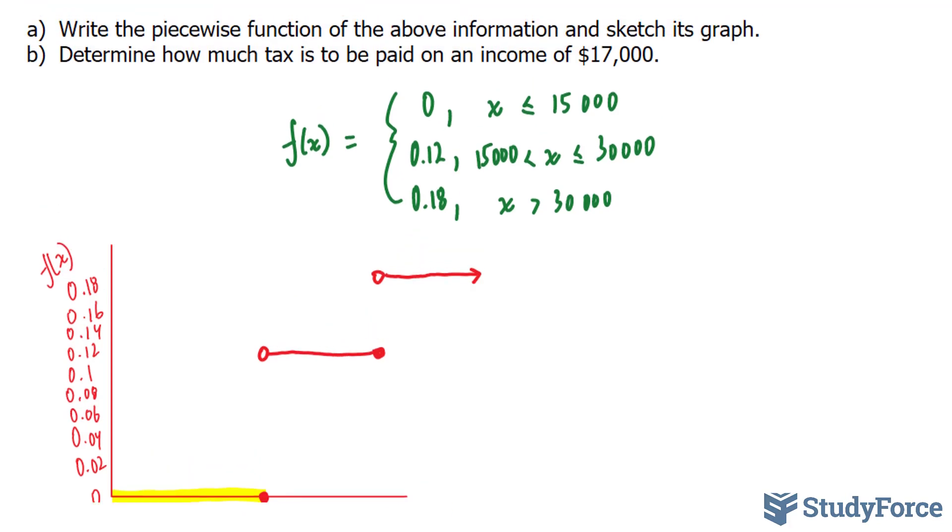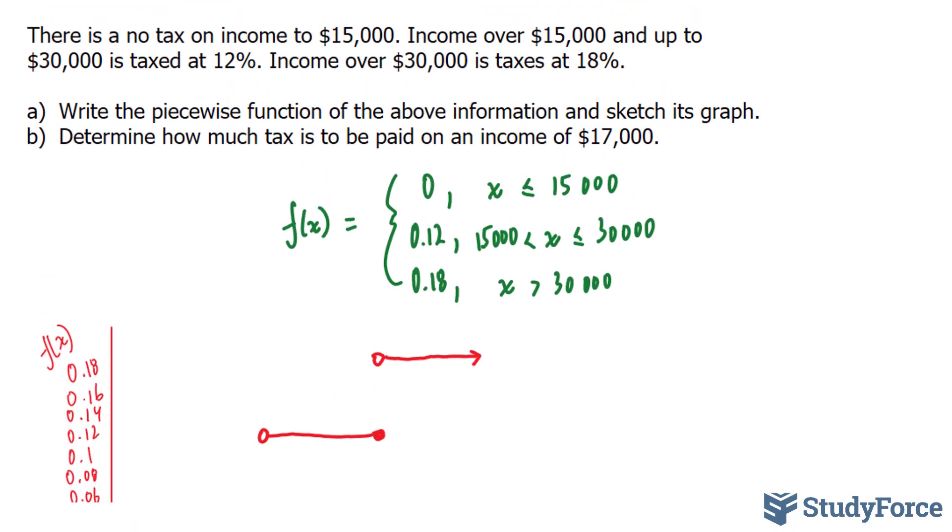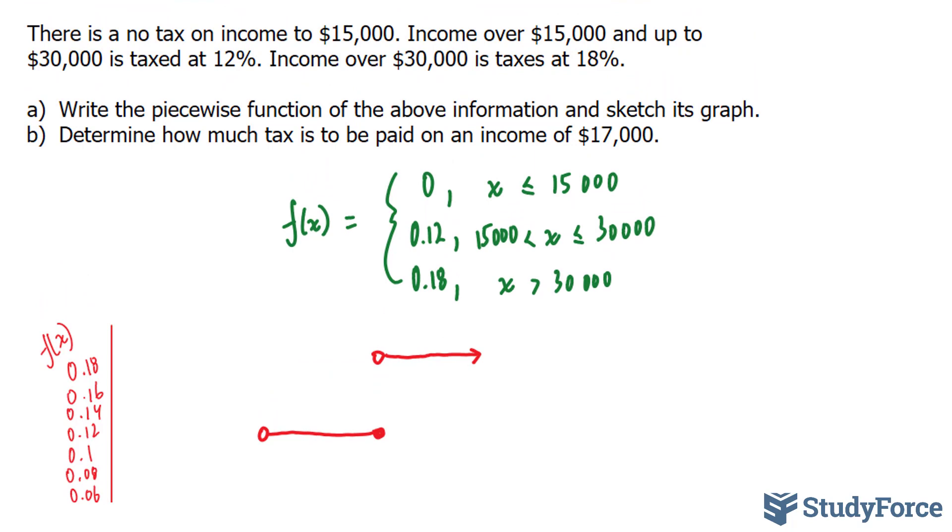Let's move on to Part B. Part B asks, determine how much tax is to be paid on an income of $17,000. Now before we jump into answering this, recall the question tells us that income over $15,000 and up is taxed, but any income that you earn from $0 to $15,000 is not.